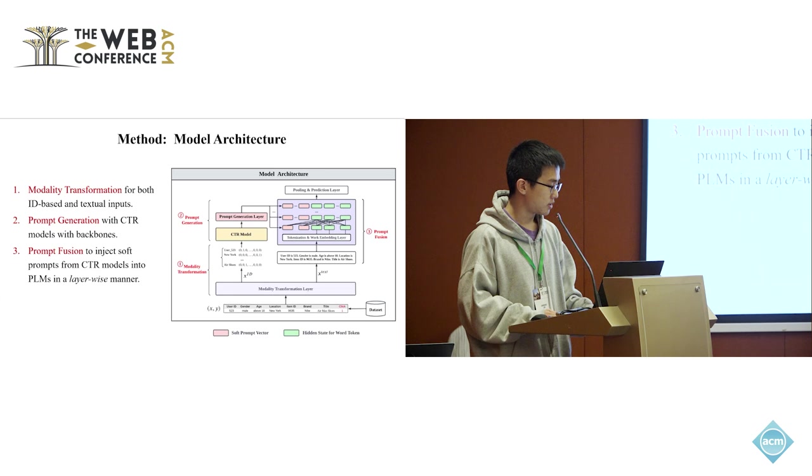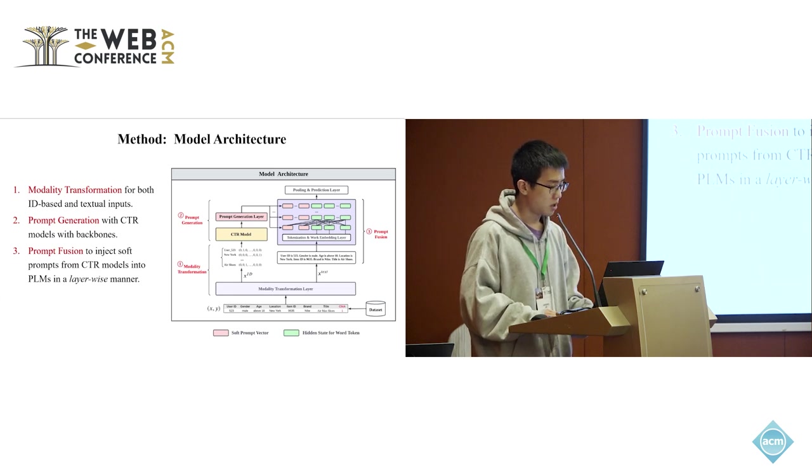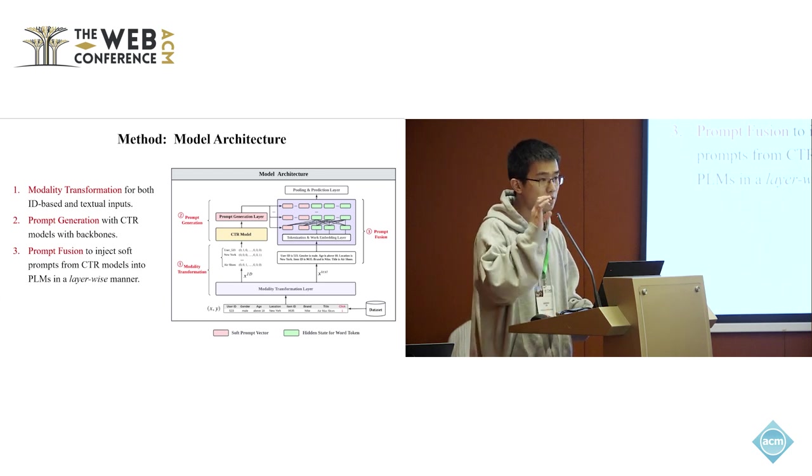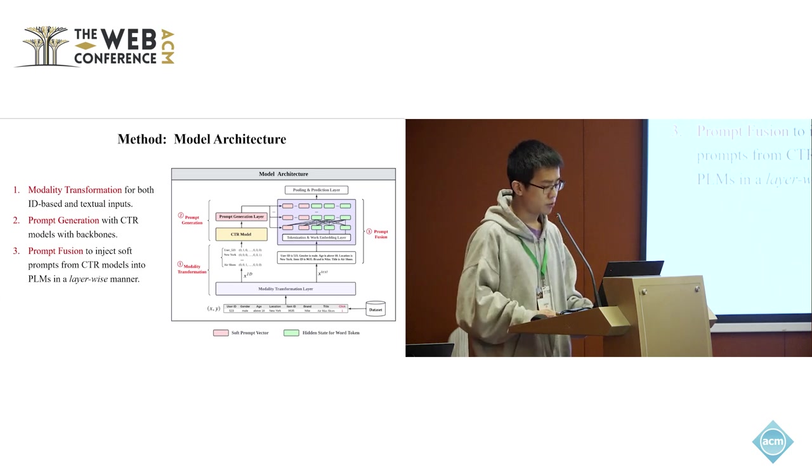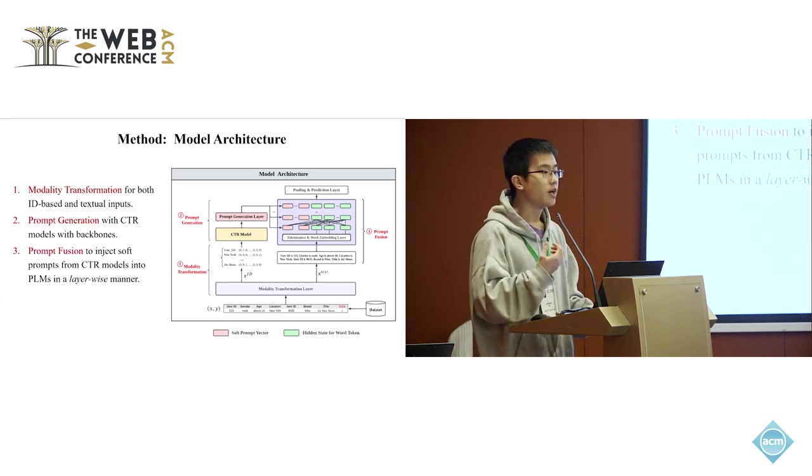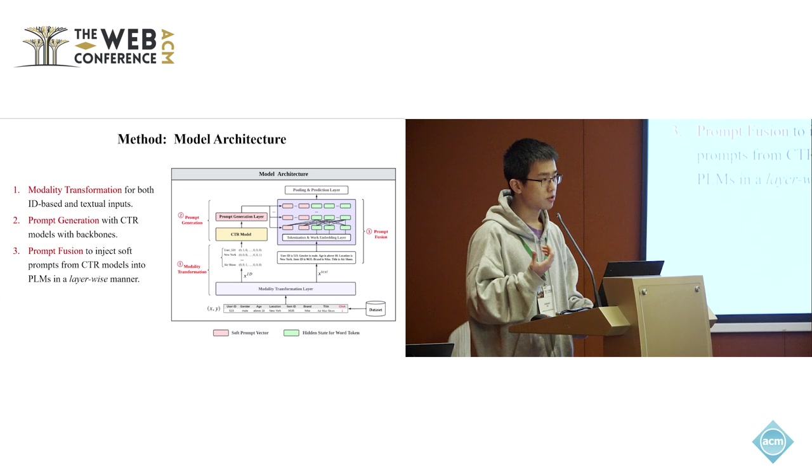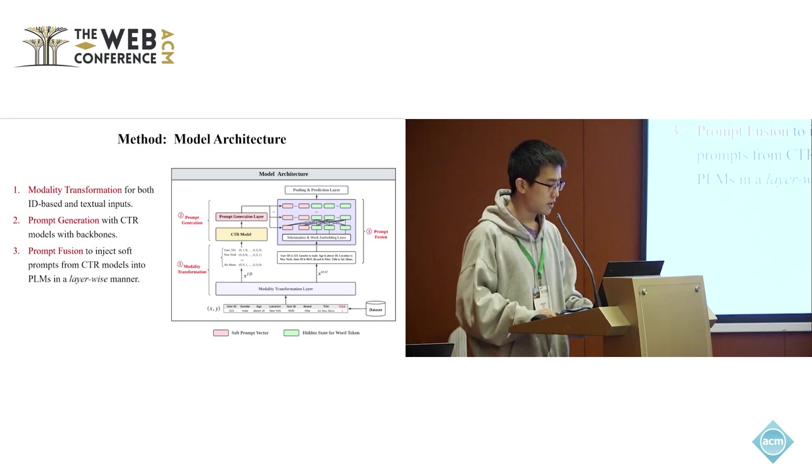The second component is called prompt generation, where we will feed the binary ID codes into the CTR model and get the final representation from the CTR model and feed it into the pink prompt generation layer. The prompt generation layer will output a set of independent parallel soft prompt vectors. Finally, the final component is called prompt fusion.